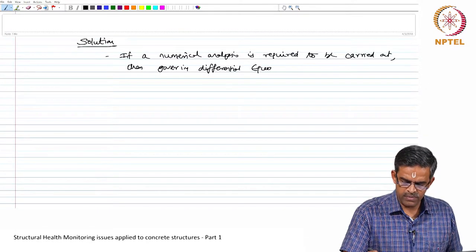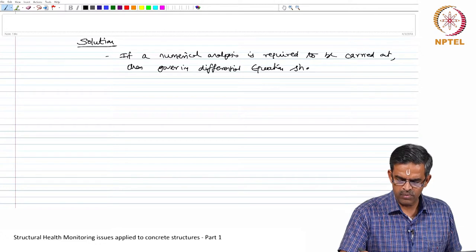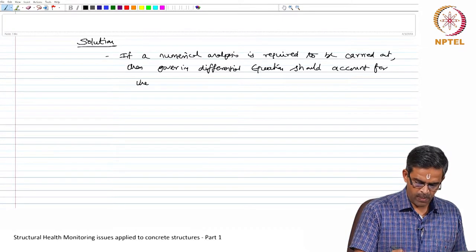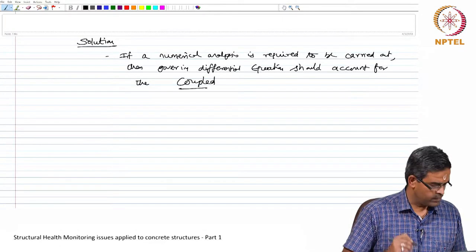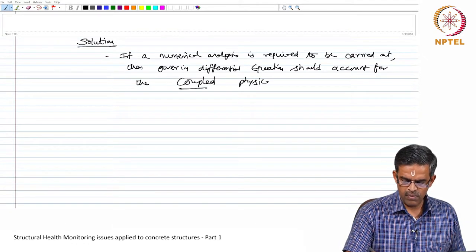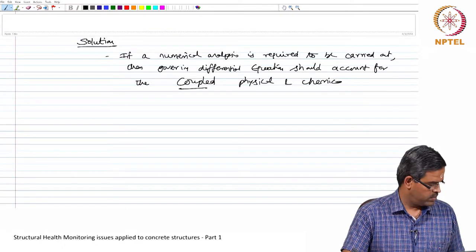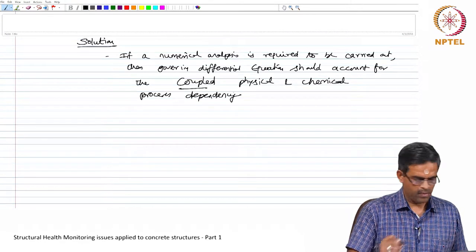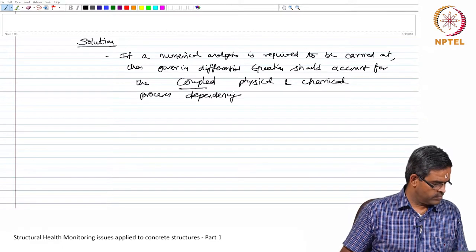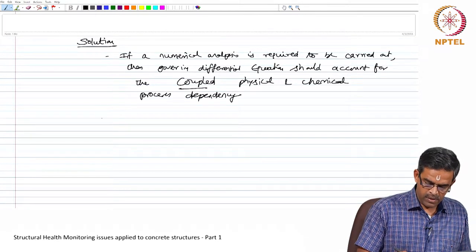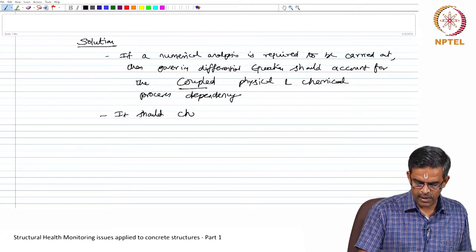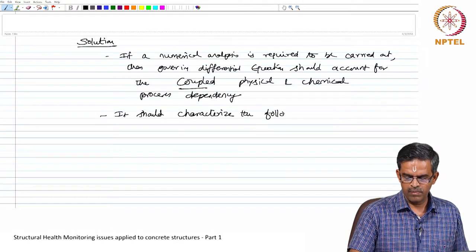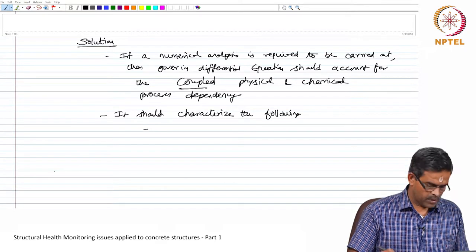So, the governing differential equation should account for the coupled physical and chemical transfer process dependency. It should characterize the following: One, mass energy balance.